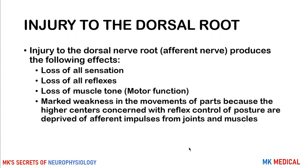Beginning with injury to the dorsal nerve root: remember that the dorsal nerve root consists of purely sensory — purely afferent — fibers. So this results in loss of all sensations, both those carried by the dorsal column and those carried by the anterolateral column. You also lose muscle tone and all your reflexes, and there will be marked weakness in movements because the higher centers controlling reflex posture are deprived of afferent impulses from the joints.